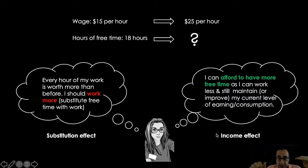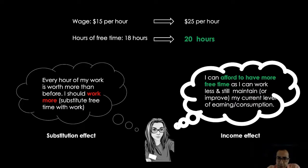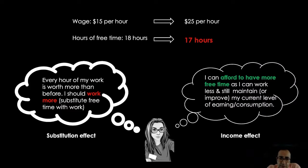The main question is: what would happen to Sarah? Which of these effects becomes stronger — will the income effect dominate the substitution effect, or the other way around? That depends on Sarah's preference regarding the work-life balance. If she puts a lot of value on free time, then the income effect would dominate and Sarah would end up working less, increasing her hours of free time. However, if Sarah valued work more than free time, the substitution effect would dominate, and Sarah would decide to work more and decrease her hours of free time.